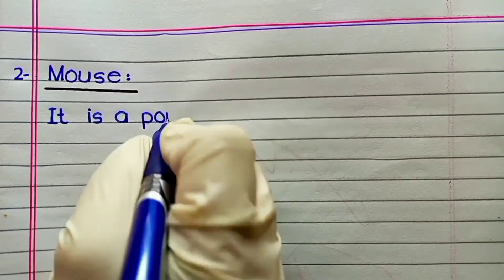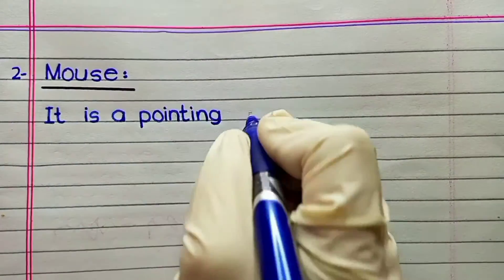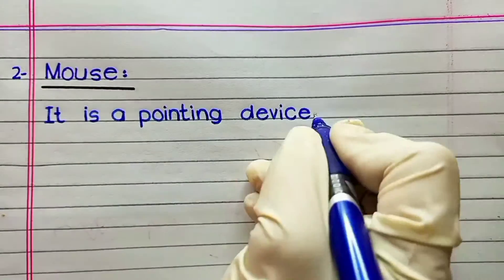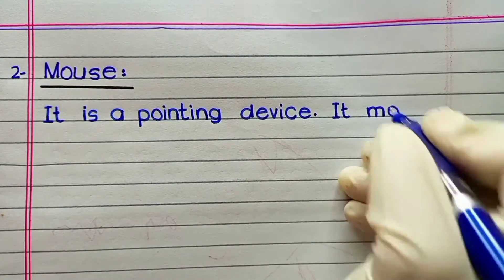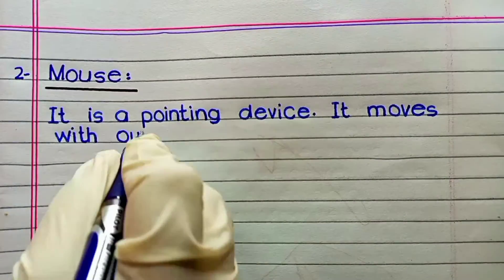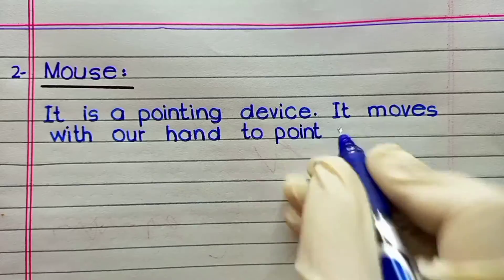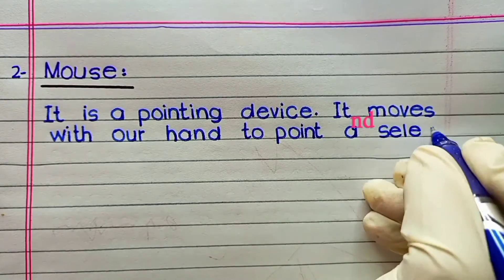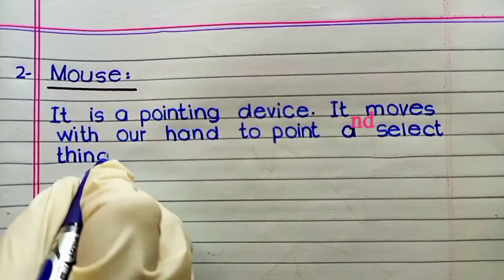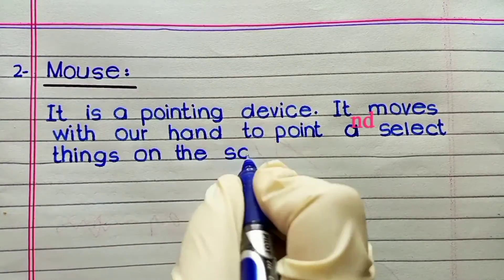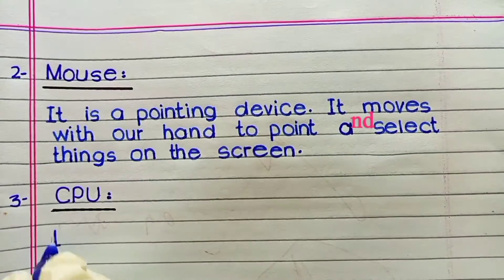Mouse. It is a pointing device. It moves with our hand to point and select things on the screen.